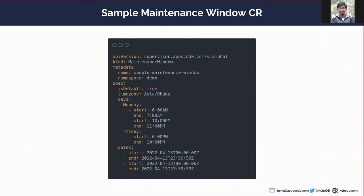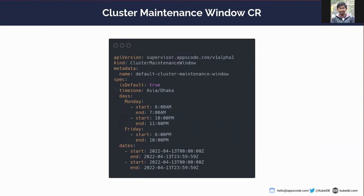After that, let's talk about the cluster maintenance window custom resource. The cluster maintenance window custom resource is exactly the same as the maintenance window. The difference between both is that cluster maintenance window is a cluster-scoped object, while maintenance window is a namespace-scoped object.